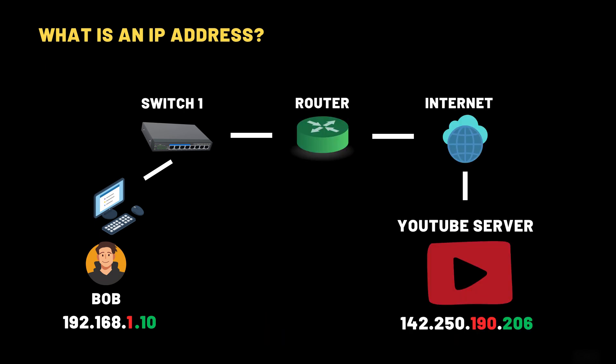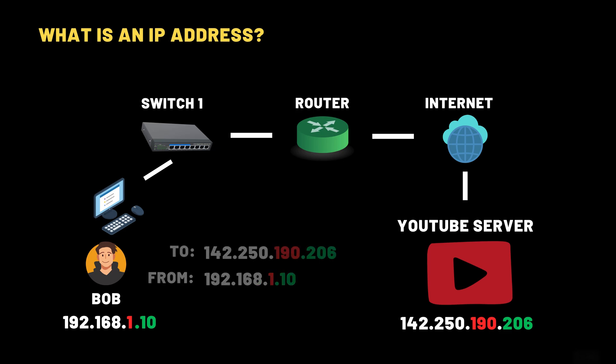When your device loads a YouTube video, for example, it's just like writing a letter. The 'to' address is the IP of the YouTube server. The 'from' address is your own IP. If your device doesn't have an IP address, that letter never gets sent — and no video for you. To recap: an IP address is a unique identifier that allows devices to send and receive data on a network. Without IP addresses, computers wouldn't know where to send data — the entire internet would collapse.